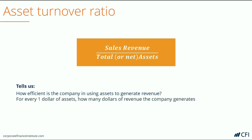Put it another way: for every $1 of assets the company has, how many dollars of revenue can it generate? By analyzing this trend over time, we can see if the company is becoming more efficient or less efficient in generating revenue from its assets.